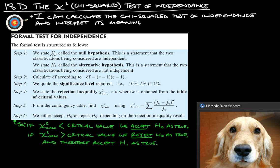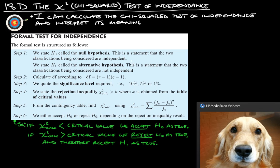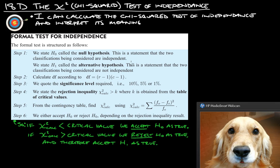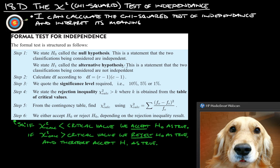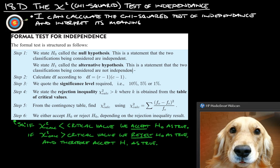First thing we do is we state H0, H sub O, which is called the null hypothesis. This is a statement that the two classifications being considered are independent. So this is basically just our hypothesis. And then we have H1, which is the alternative hypothesis in case the original hypothesis is not true. So this is a statement that the two classifications being considered are not independent.